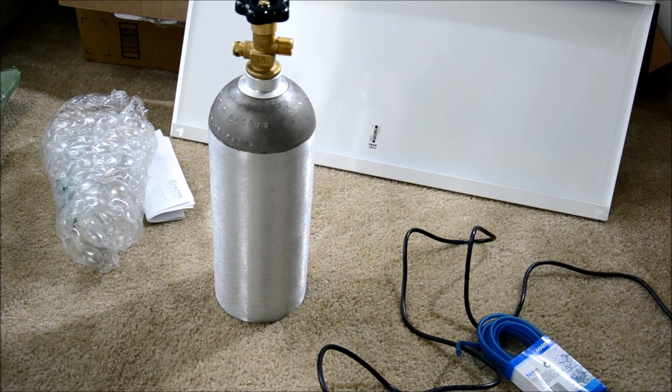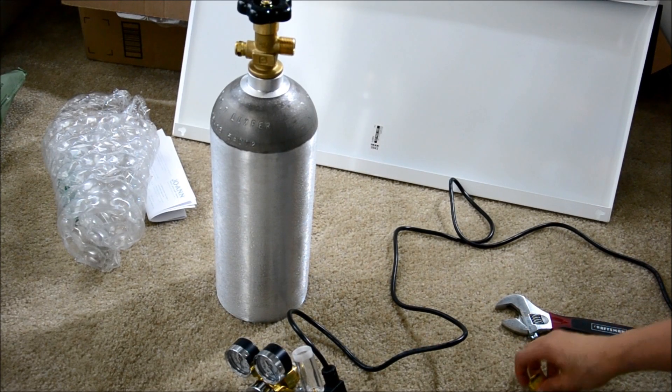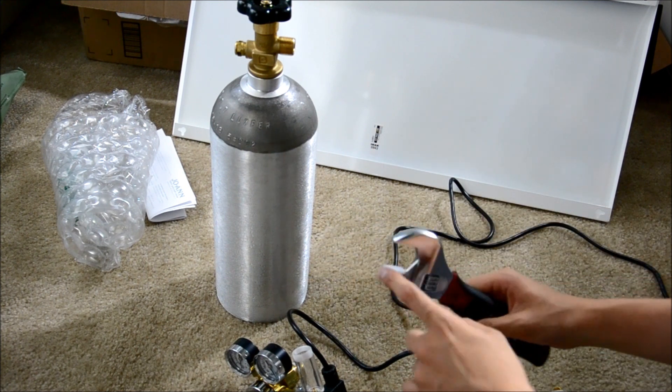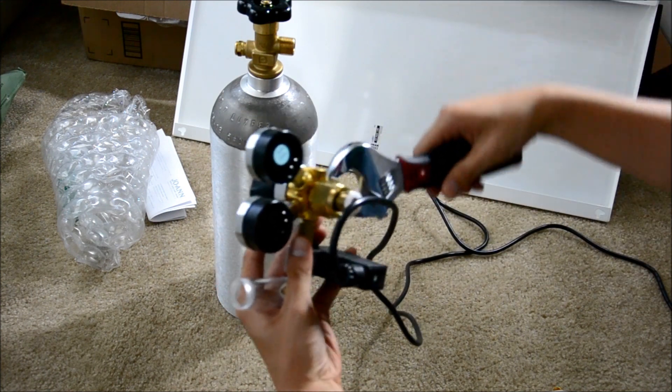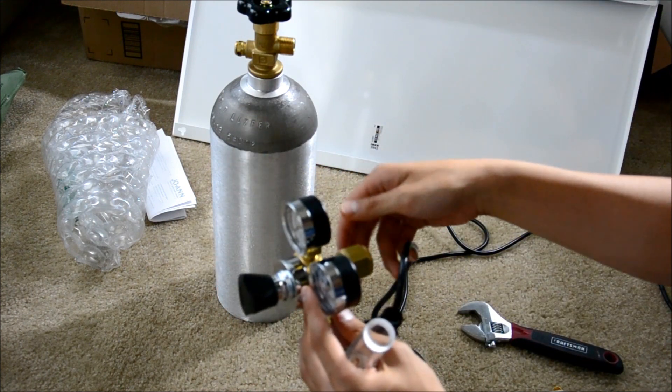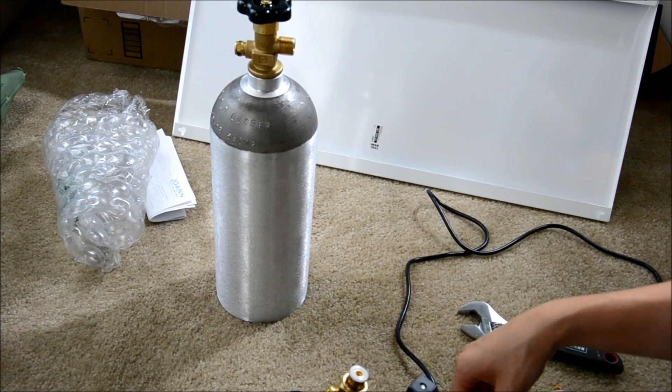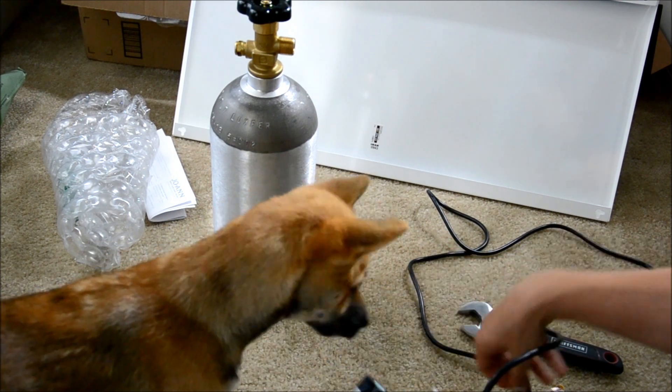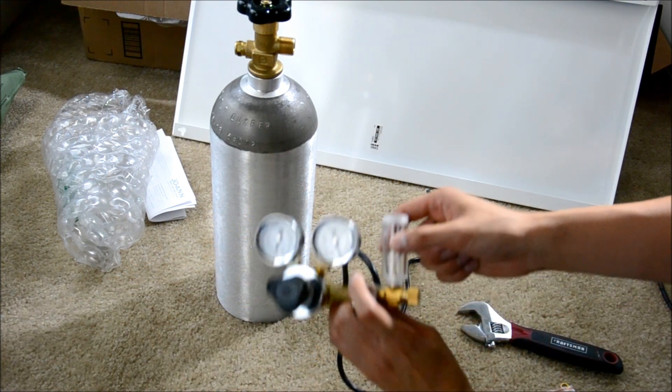So once you have that, let me show you what kind of tools you'll need to set this up. So what you'll need is you'll need a crescent wrench or a wrench that's big enough to fit this dude here. Because you'll need to basically first do it by hand and then crank it down to make sure it's sealed tight. It does come with a washer. So you'll need this crush washer.